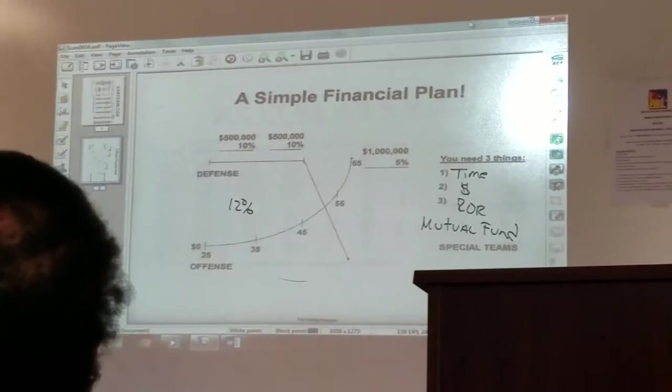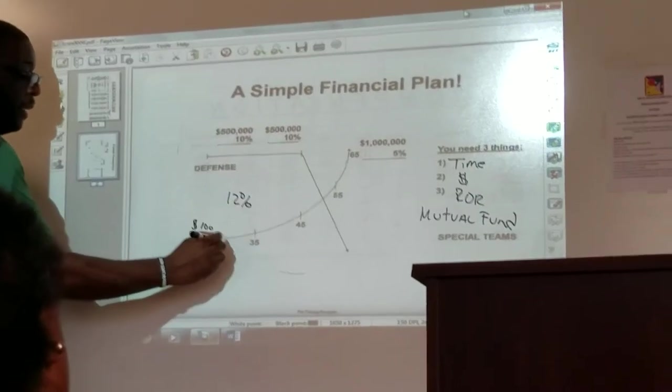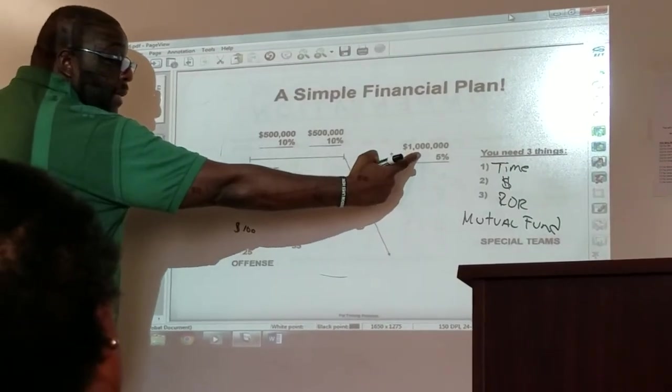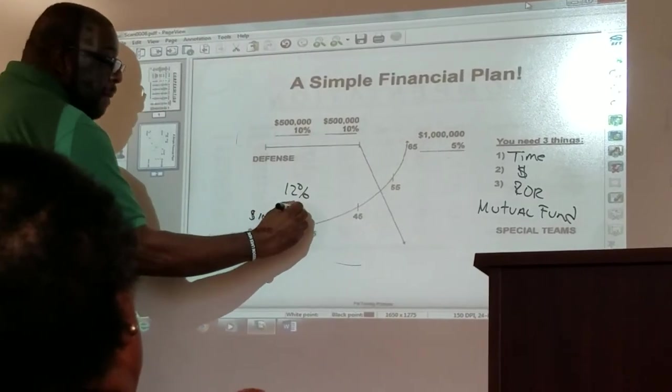12% rate of return is what they've averaged. So if you're 25 years old, you put away $100 a month all the way to age 65, you have how much? A million dollars. How much do you need if you wait until you're 35? $300. Very good.